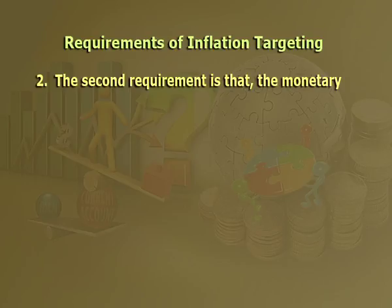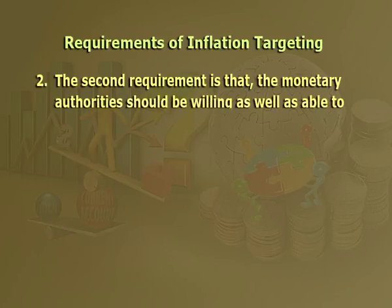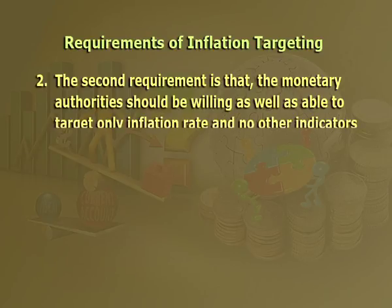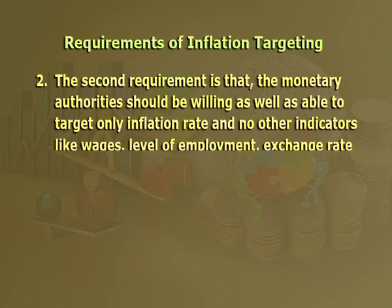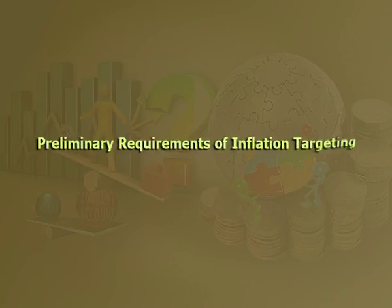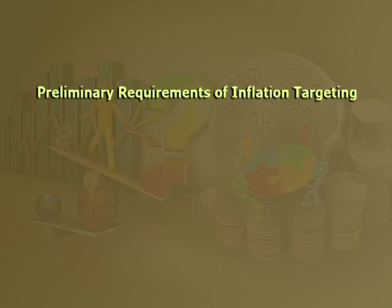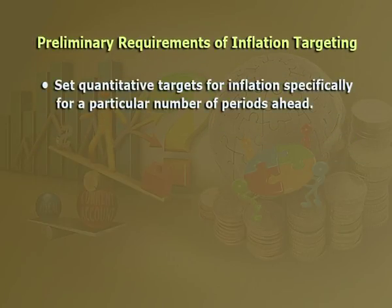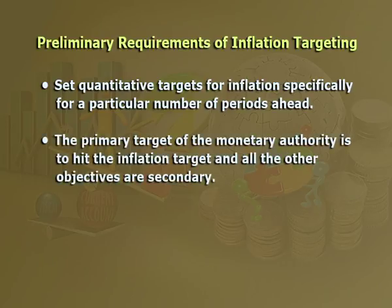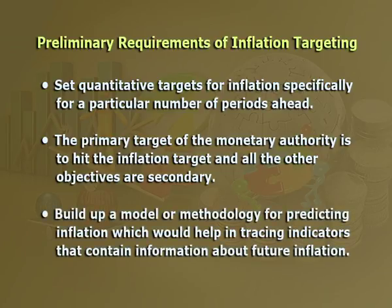Number two, the second requirement is that monetary authorities should be willing as well as able to target only the inflation rate and no other indicators like wages, level of employment, exchange rate, etc. After meeting these two requirements, several other preliminary requirements must be fulfilled: set quantitative targets for inflation specifically for a particular number of periods ahead; the primary target of the monetary authority is to hit the inflation target with all other objectives secondary; and build up a model or methodology for predicting inflation to trace indicators containing information about future inflation.